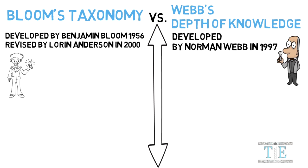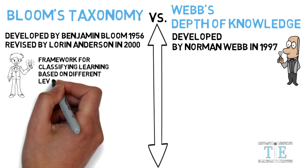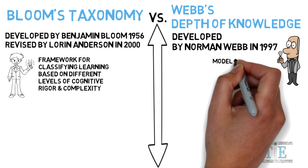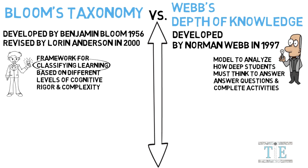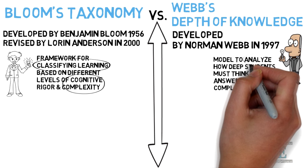What is Bloom's Taxonomy? It's a framework for classifying learning based on different levels of cognition. Webb's Depth of Knowledge, on the other hand, is a model to analyze how deep students must think. To summarize, Bloom's Taxonomy is used to classify learning on levels of cognitive complexity, and Webb's Depth of Knowledge is used to analyze how deep students think.